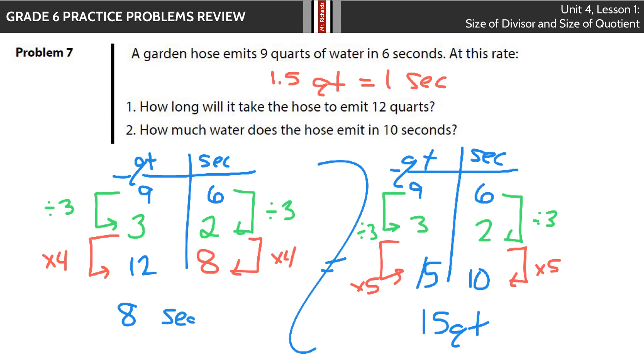Also, 9 quarts, 6 seconds, same thing, 3 quarts, 2 seconds. I'm trying to get down now to 10, so I can multiply by 5. 2 times 5 is 10, 3 times 5 is 15, so 15 quarts. That's it for this review. Good luck.